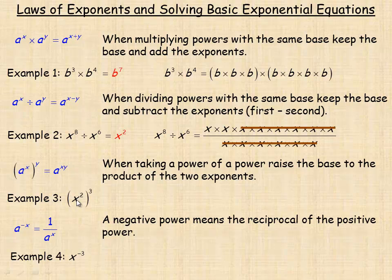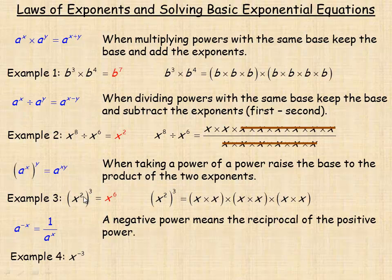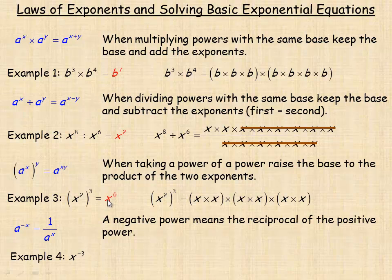In example three, x squared cubed equals x to the power of six — you multiply two by three. To show why: x squared cubed means three x-squareds, and each x squared is x times x. So altogether there are six x's multiplied, giving x to the sixth.